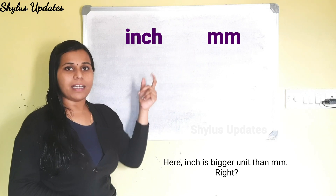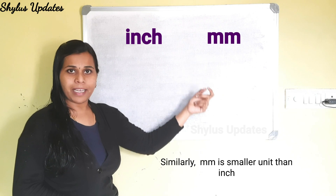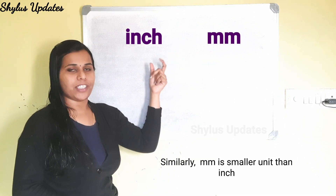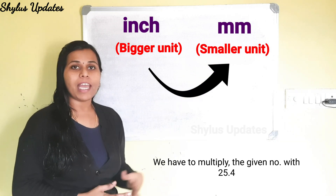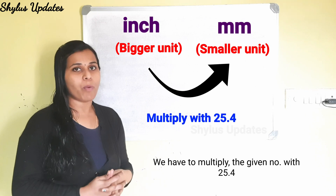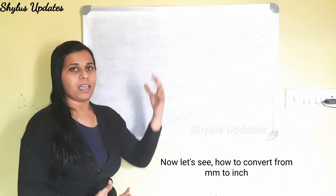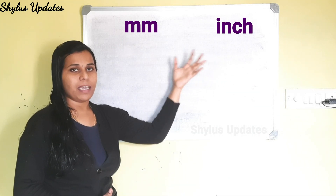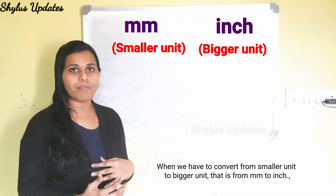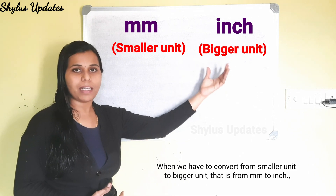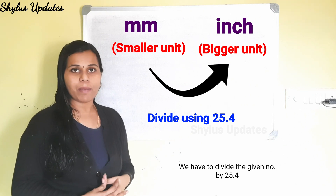Inch and mm: inch is a bigger unit than mm, and mm is a smaller unit than inch. To convert from a bigger unit to a smaller unit, we have to multiply the given number by 25.4. To convert from mm to inch, since mm is the smaller unit, we have to divide the given number by 25.4.